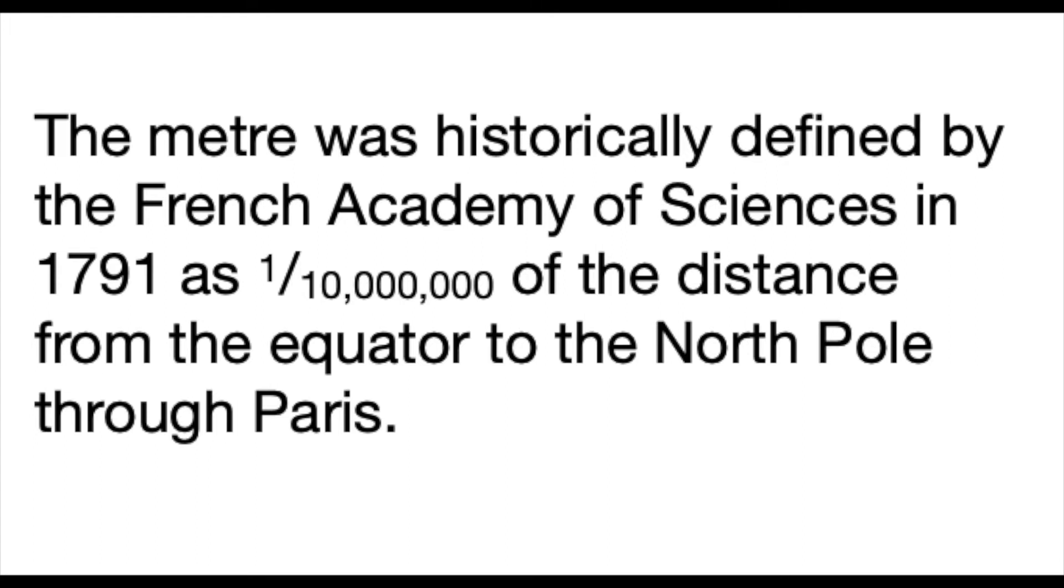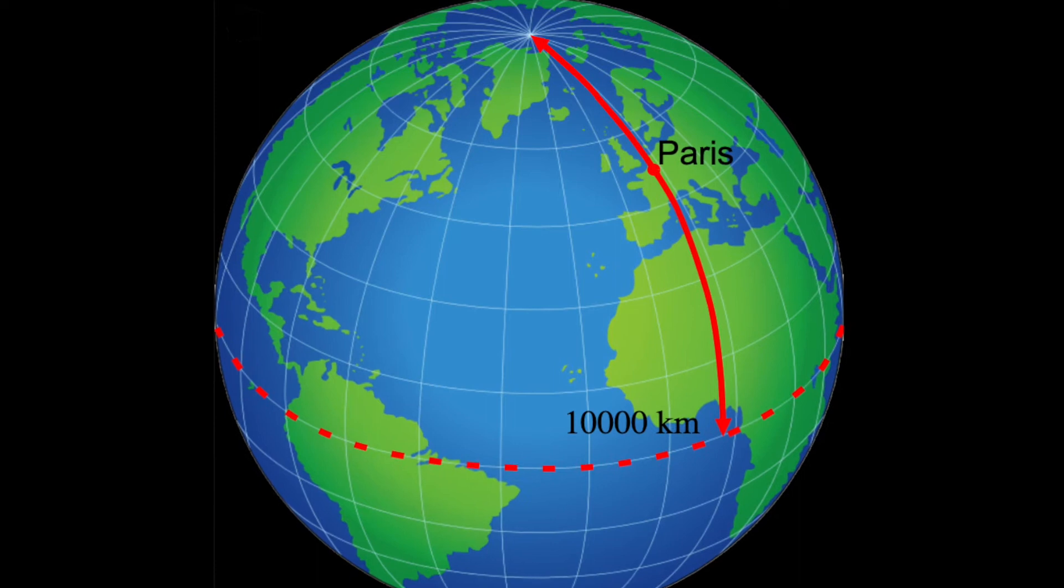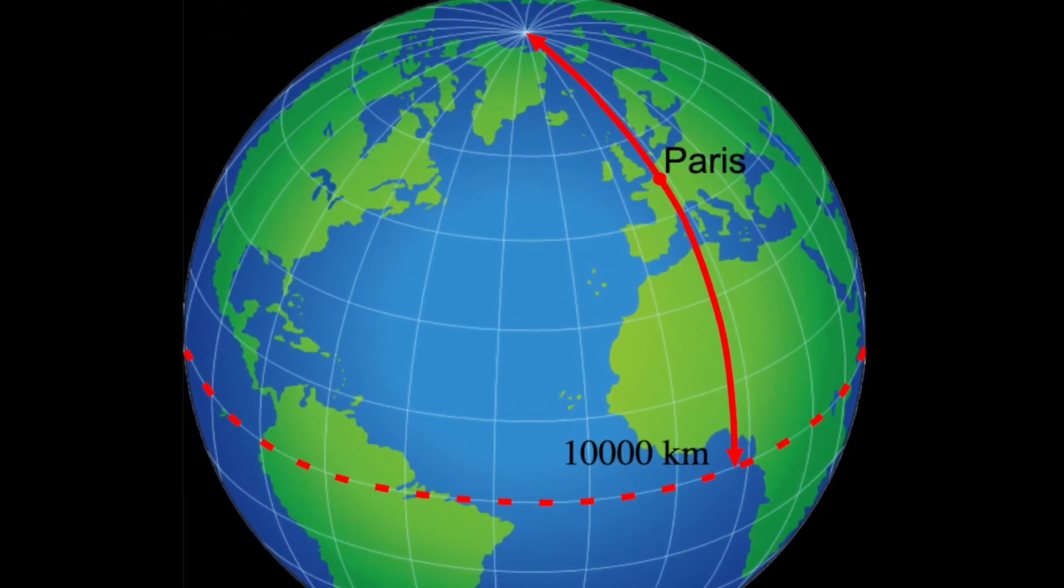The original definition was set by the French Academy of Sciences in 1791 as one ten millionth of the distance from the equator to the North Pole running through Paris.